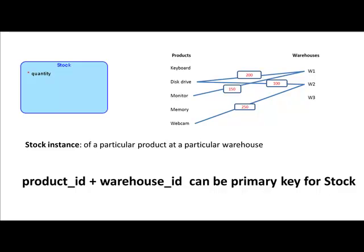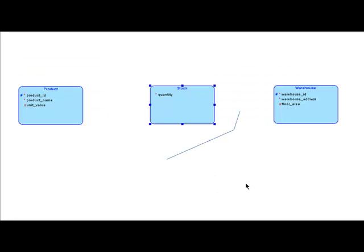But if you just say product, you don't know — the product may have stocks in many warehouses. If you just say warehouse, a warehouse has stocks of many different products — which product are you talking about? But the moment you mention the combination of product and warehouse, then you are talking about a unique stock. So the combination of product ID and warehouse ID could be the primary key for stock.